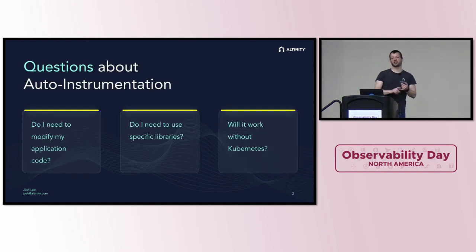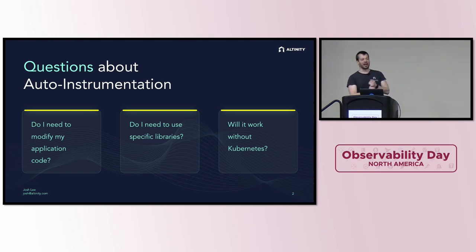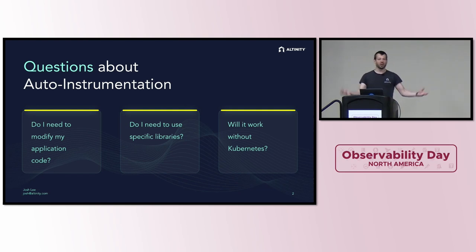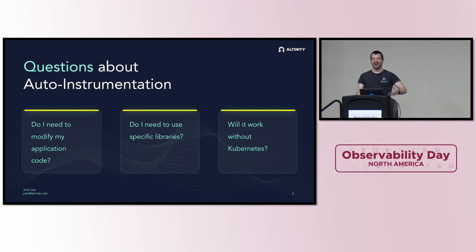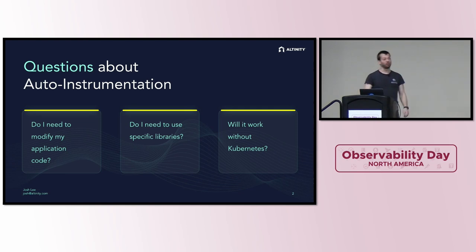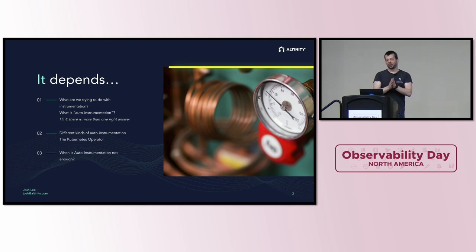The questions that inspired this talk were: Do I need to modify my application code in order to use auto-instrumentation? Will it work no matter what libraries I'm using, or do I need to use specific ones? And will it work if I'm not using Kubernetes? These are the questions that came up the most, and of course it depends — but that's why we're here to talk about it in depth.